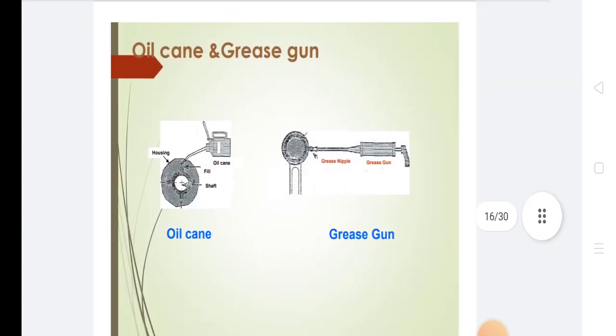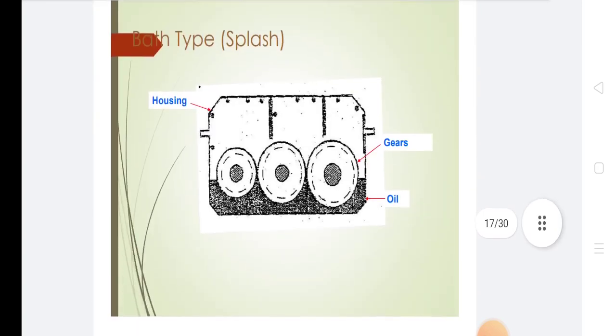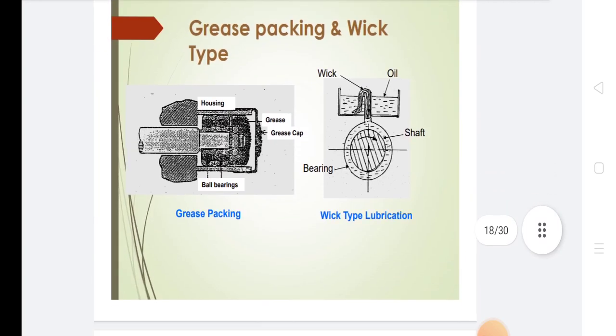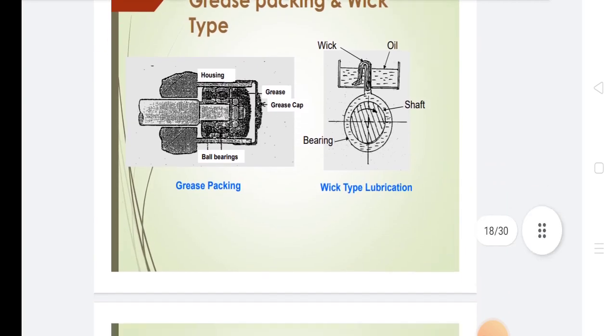This is an oil can and grease gun. Bath type using splash lubrication with housing, grease, and oil. This is grease packing and wick type lubrication.